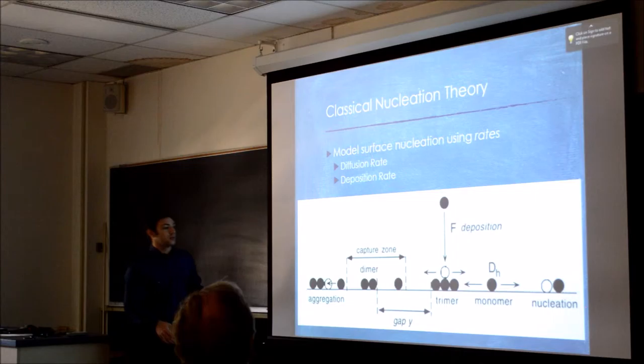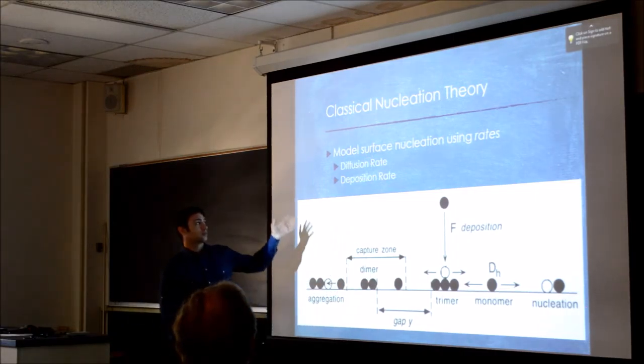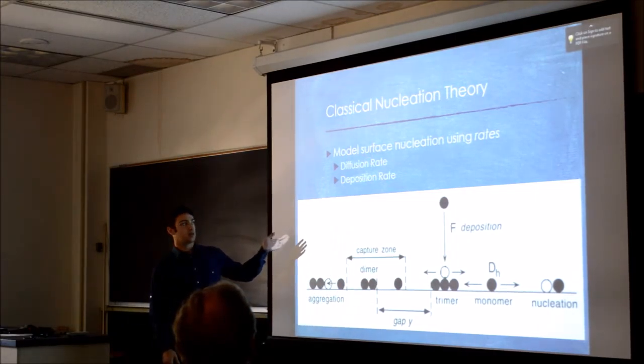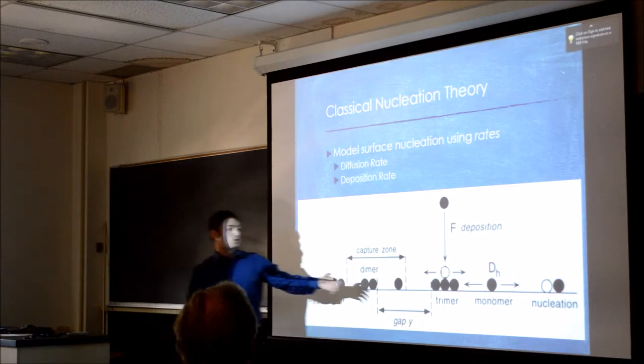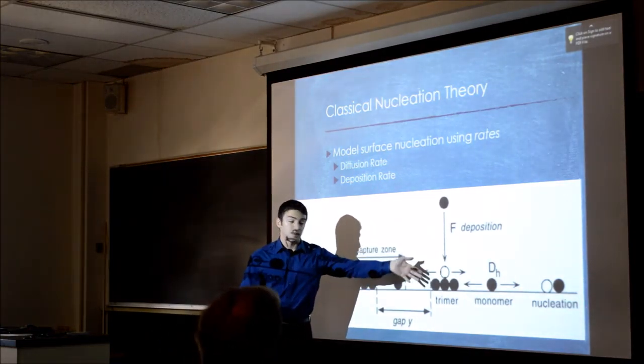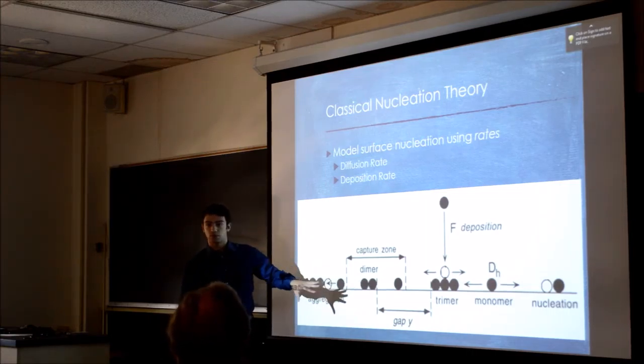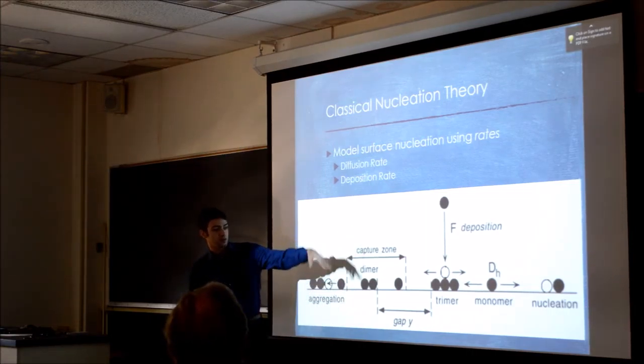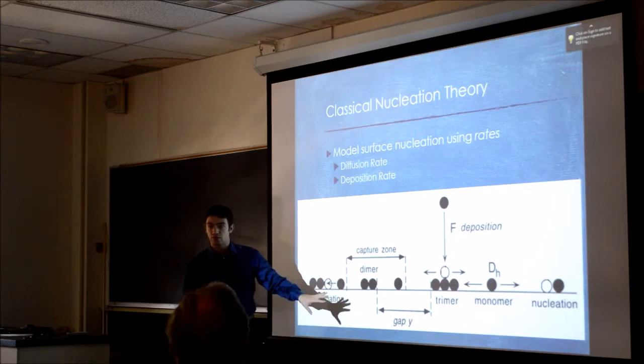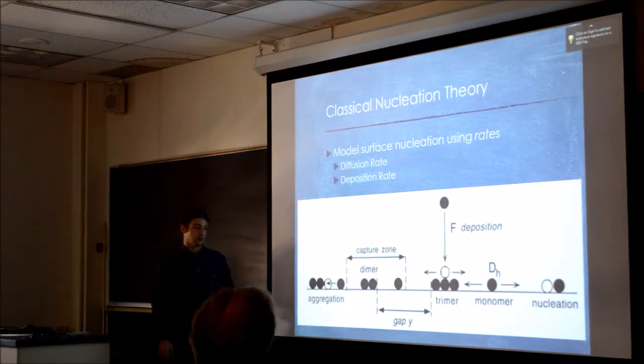So the general picture is this: you deposit things. We model this with rates. The diffusion rate and the deposition rate. You deposit something with some flux F that's related to deposition, and in the meantime, things on the surface can diffuse around. How often things are deposited versus how often things diffuse is kind of a key variable of interest.